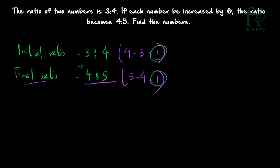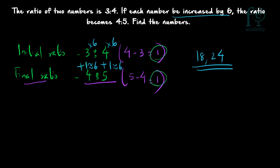Since the difference is already the same, no conversion is needed. What is happening? 3 plus 1 gives 4 and 4 plus 1 gives 5, so adding 1 converts the initial ratio to the final ratio. This 1 is equivalent to 6, because the question states each number is increased by 6 to get the final ratio. So your actual numbers are 3 into 6 and 4 into 6, giving 18 and 24 as the required numbers.